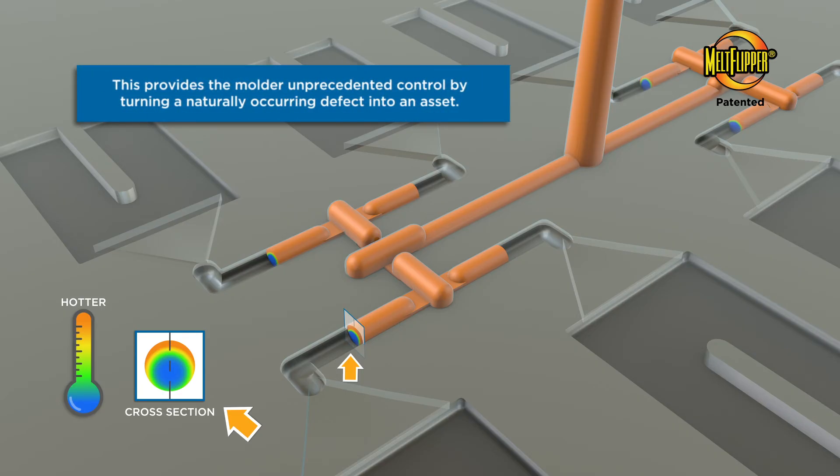Simply put, it uses the fundamentals of plastic flow to its advantage by repositioning the non-uniform melt conditions to a location that eliminates the problems shear induced imbalances cause.